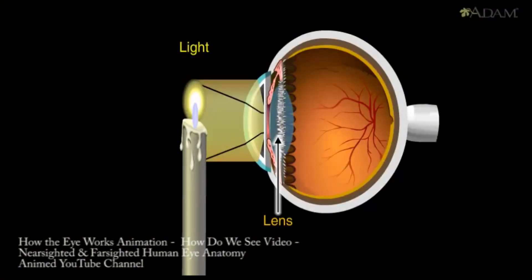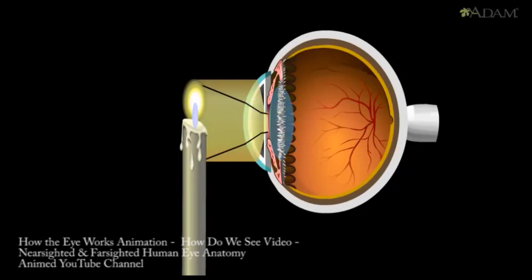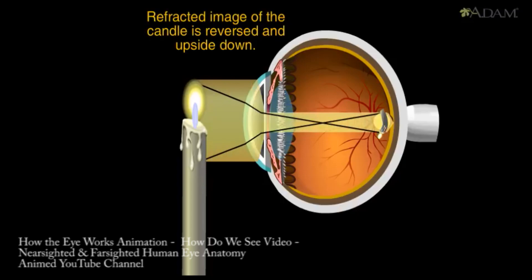The first important note is that the flipping of this image is a hardwired design. Nature chose a design that inverts the image before the signal is sent to the occipital lobe.